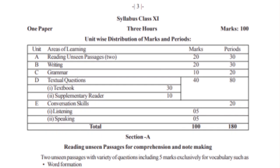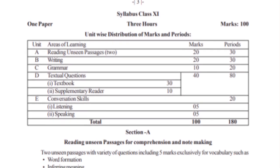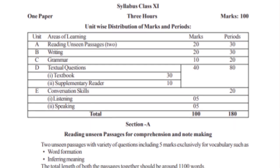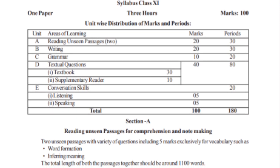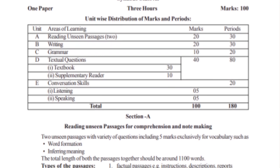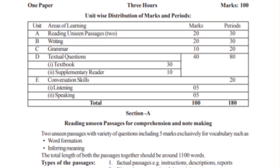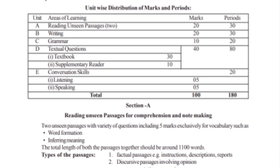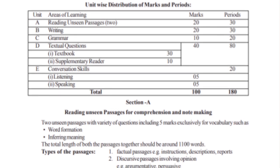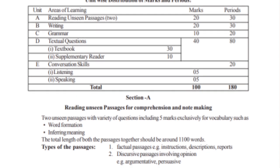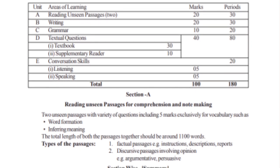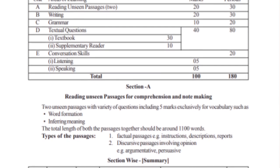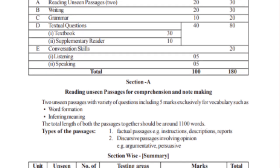Reading: Unseen Passage is 20 marks. Unseen Passage is already done in class 10. Writing is 20 marks. Grammar section is 10 marks. Textual questions is 40 marks. Textbook is 30 marks. Supplementary is 10 marks.